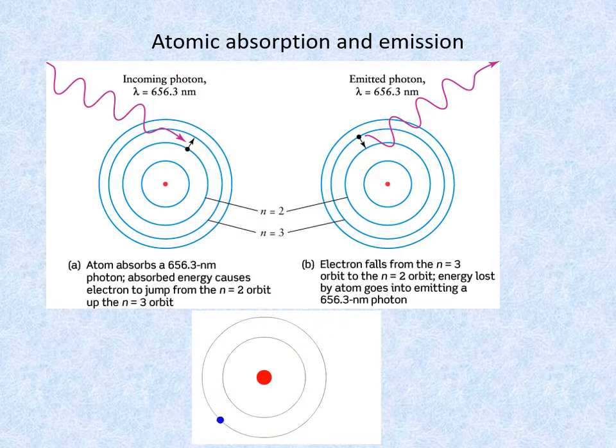Similarly, if an electron falls down one or more shells it must emit exactly the right amount of energy as a photon. The photon's energy is exactly equal to the difference between the energy levels through which the electron fell.